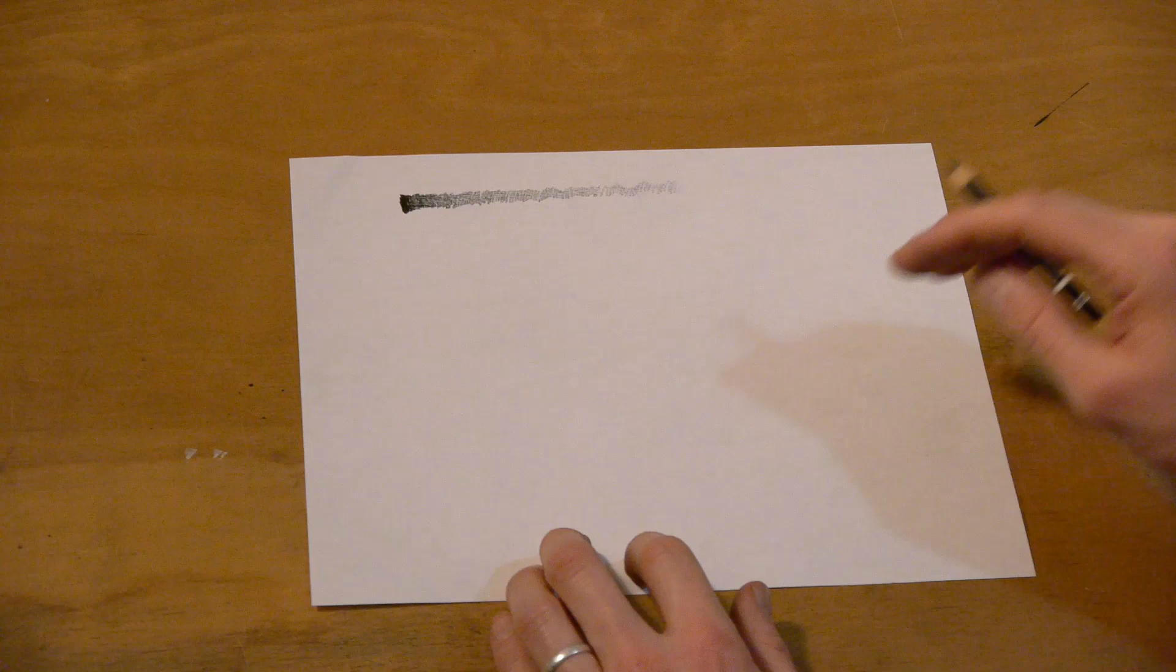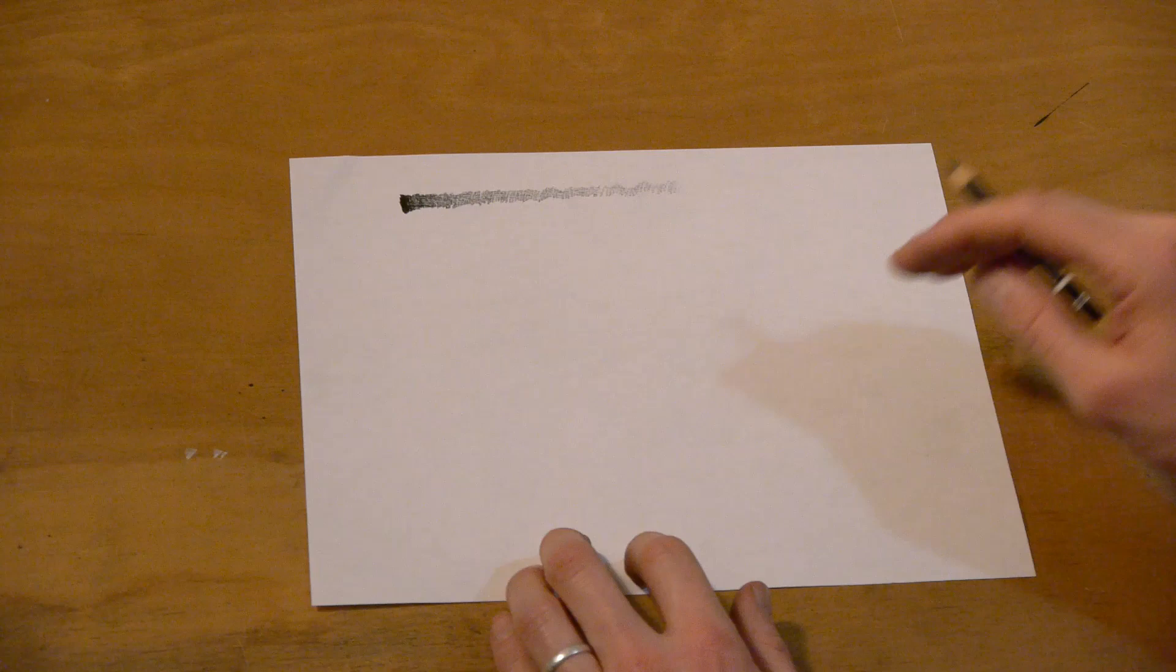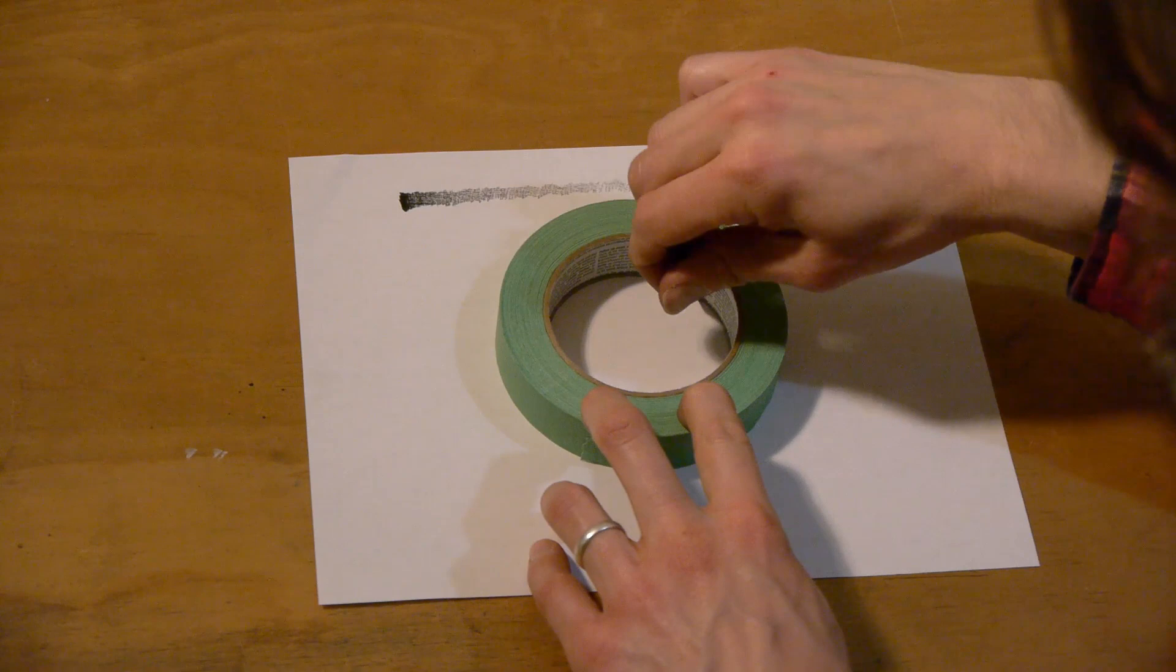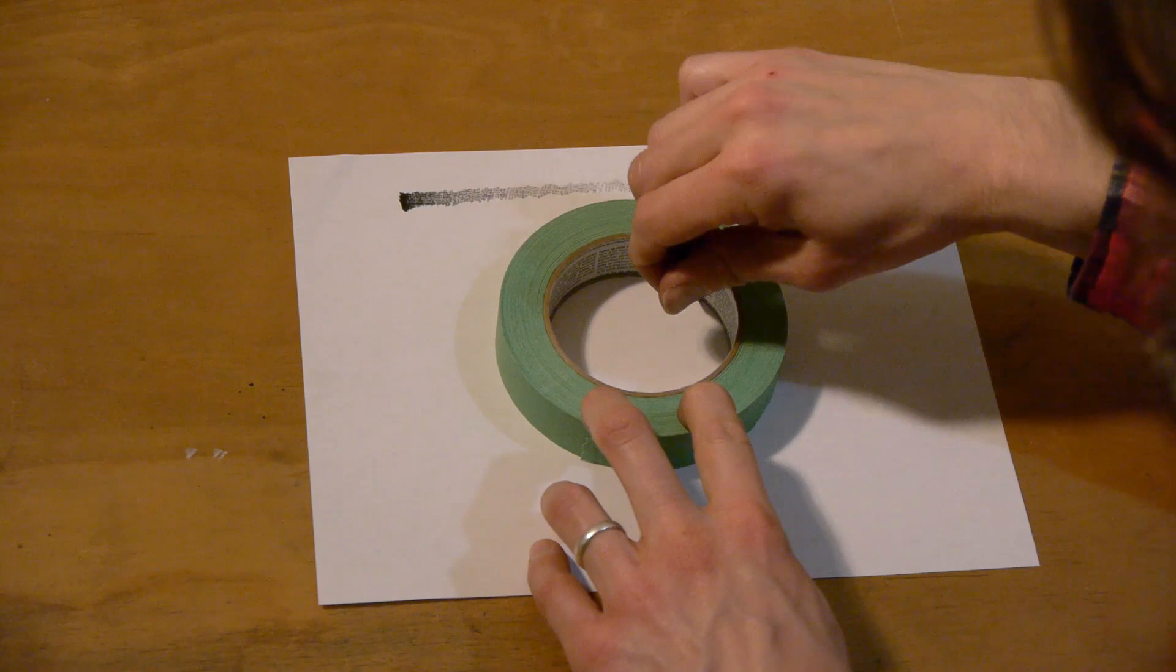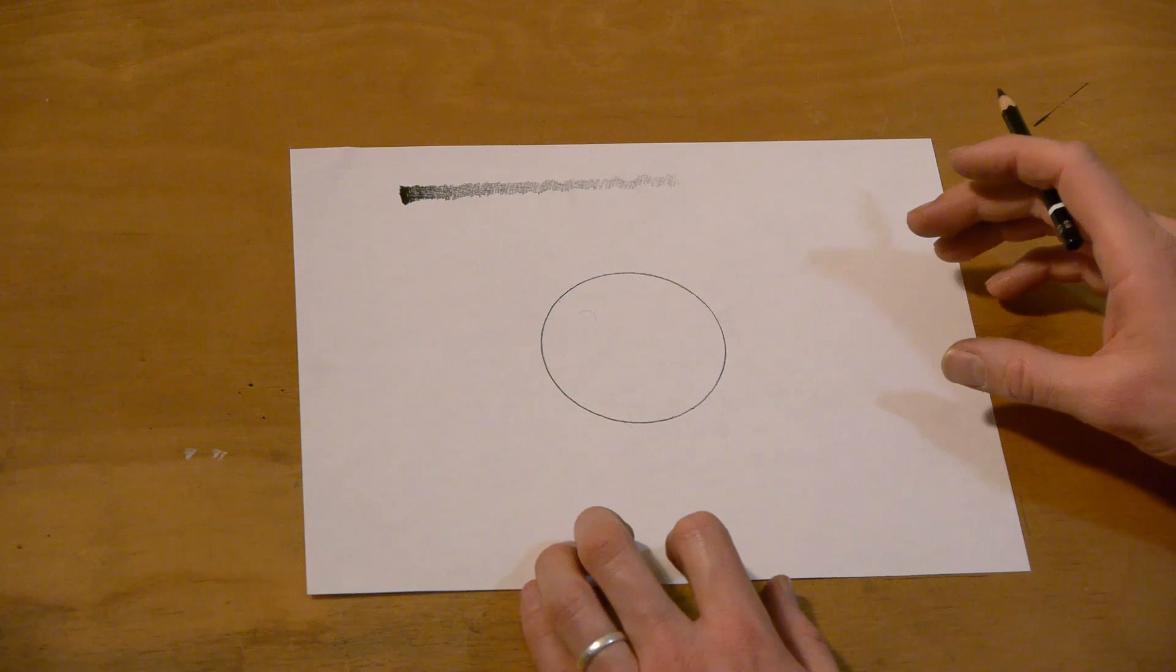So now let's turn our circle into a ball. First of all, we need a circle. I'm going to use something to make my circle a perfect circle. You don't have to do this. If you don't mind having just a hand-drawn circle, that's fine. I'm going to make mine like this. So there's our circle. Now I'm going to make this into a ball.